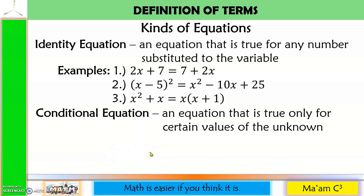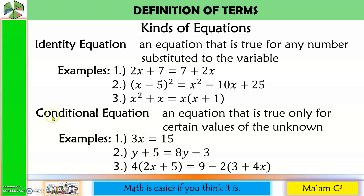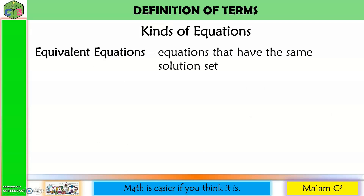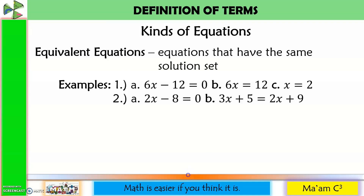A conditional equation is an equation that is true only for certain values of the unknown — this is the type of equation most commonly given to us, where we solve for the value of the unknown. Equivalent equations are equations that have the same solution set. For example, if we move negative 12 to the other side, we get 6x equals 12, and solving gives x equals 2, so those three equations are equivalent.